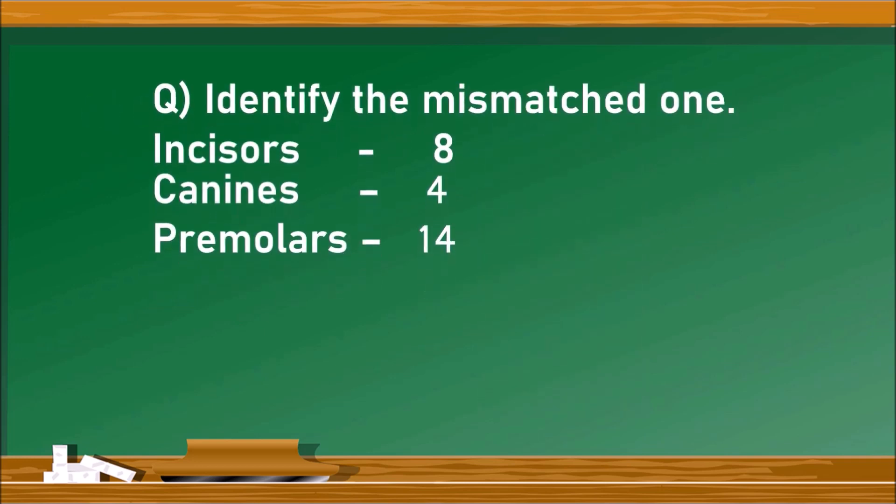Next question. Identify the mismatched one. There are three pairs: incisors, canines, and premolars. Incisors are meant to be 8, canines are 4, and premolars are 14. Here incisors, total incisors in our mouth is 8, so it is the right match. Whereas canines, the total canines are 4. But premolars, the total premolars are again 8, not 14. Hence the wrong match is premolars 14.